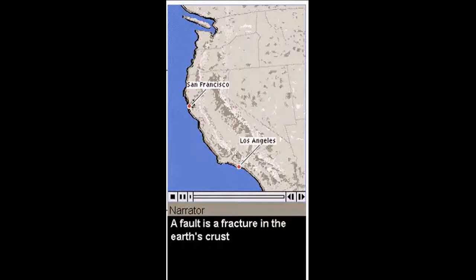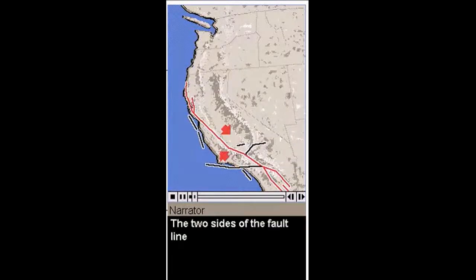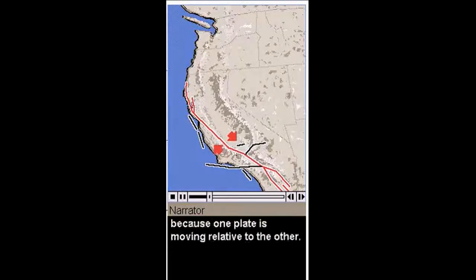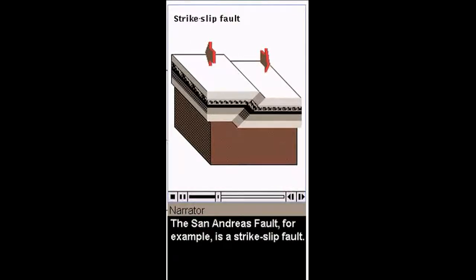A fault is a fracture in the Earth's crust, characterized by an uneven crack that may run for many kilometers. The two sides of the fault line are actually two gigantic moving sections, or plates, of the Earth's crust. The crack in the Earth is created because one plate is moving relative to the other. When the plates move past each other, the relative motion is horizontal, and we have a strike-slip fault. The San Andreas fault, for example, is a strike-slip fault.